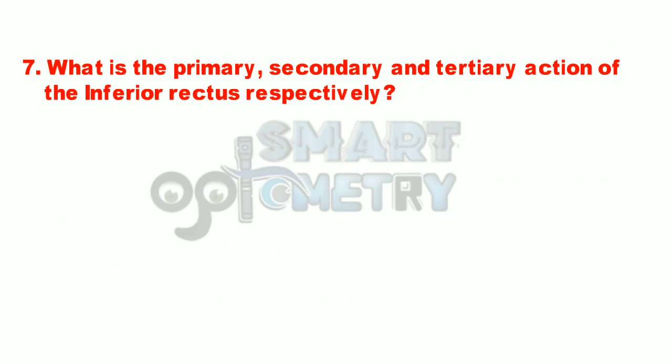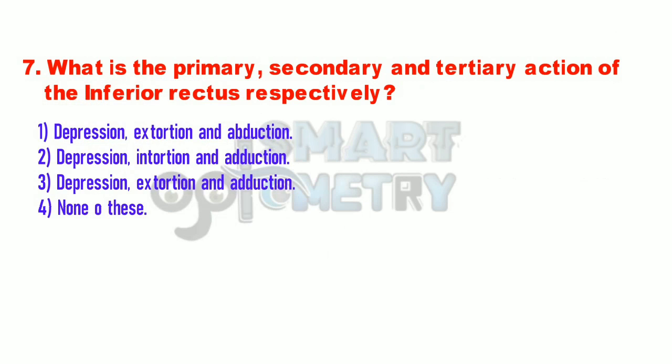Q7. What is the primary, secondary, and tertiary action of the inferior rectus respectively? 1. Depression, extortion and abduction. 2. Depression, intorsion and adduction. 3. Depression, extortion and adduction. 4. None of these.